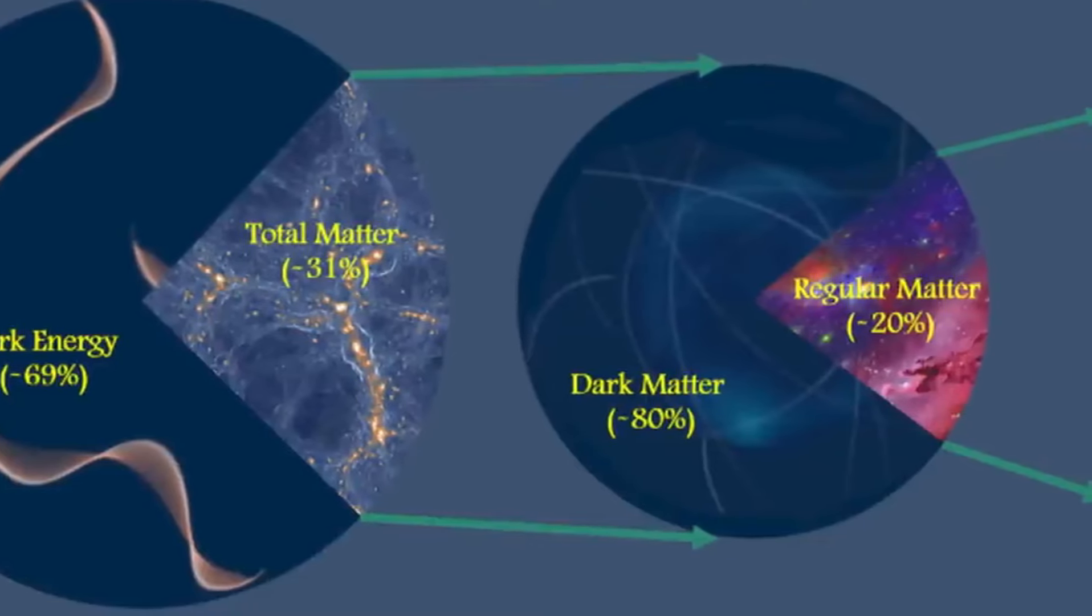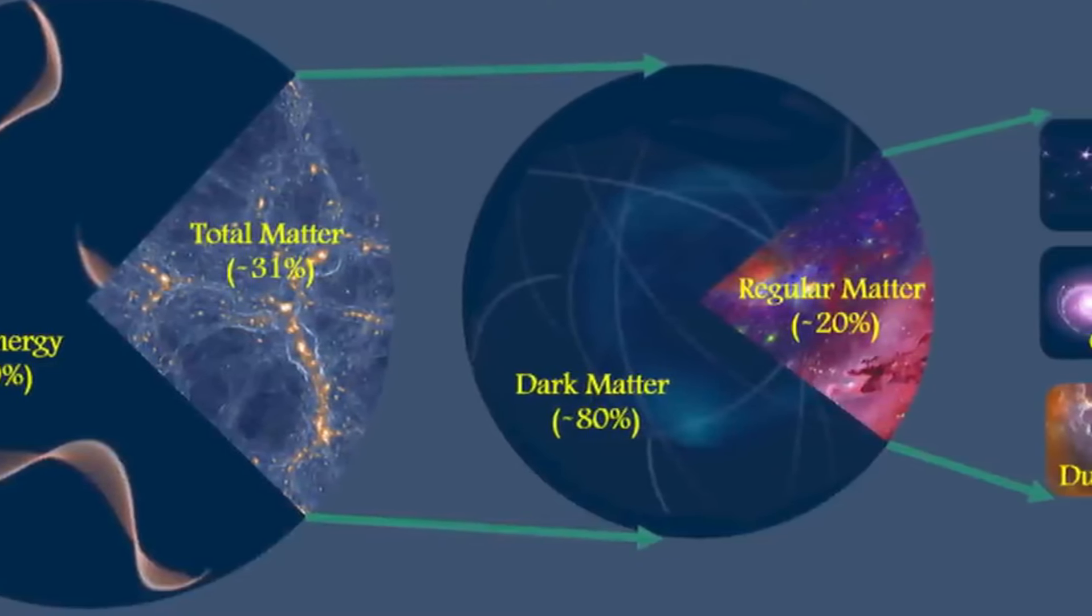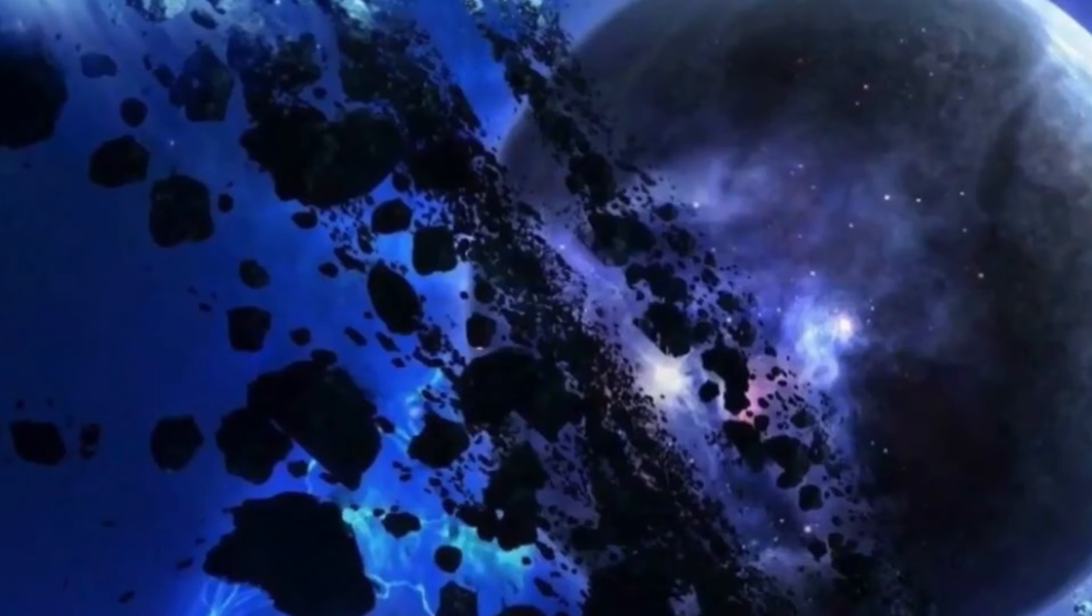The galaxies uncovered by Uncover, if you'll excuse the pun, are young, small, have a low abundance of heavy elements, and are actively forming stars, all of which supports the whole paradigm of the Big Bang theory.